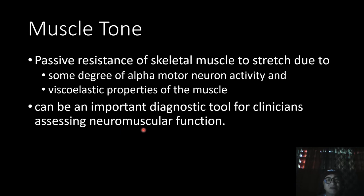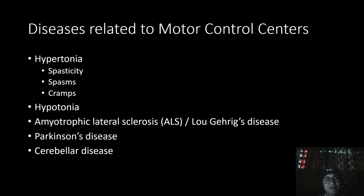Observing muscle tone can be an important diagnostic tool for clinicians assessing neuromuscular function. There are many diseases related to motor control centers of the body. Hypertonia is due to abnormally high muscle tone. In hypertonia, you may have spasticity, which is a form of hypertonia in which the muscles do not develop increased tone until they are stretched a bit. Spasms are brief, involuntary contractions that may or may not be painful, while muscle cramps are prolonged, involuntary, and painful contractions. Hypotonia is the opposite of hypertonia — a condition of abnormally low muscle tone accompanied by weakness, atrophy (decrease in muscle bulk), and decreased or absent reflex responses.